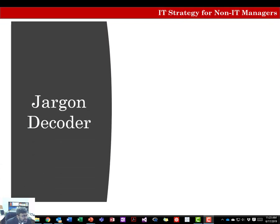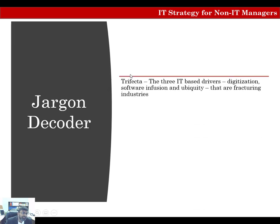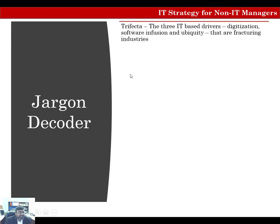We're going to discuss some terms — our jargon — which we are going to use throughout this chapter, and some of them throughout the book. Let's start with the first term, which is trifecta. These are three information technology-based drivers: digitization, software infusion, and ubiquity, which is disrupting the competitive landscape. We'll talk about what each one of them is in a minute.